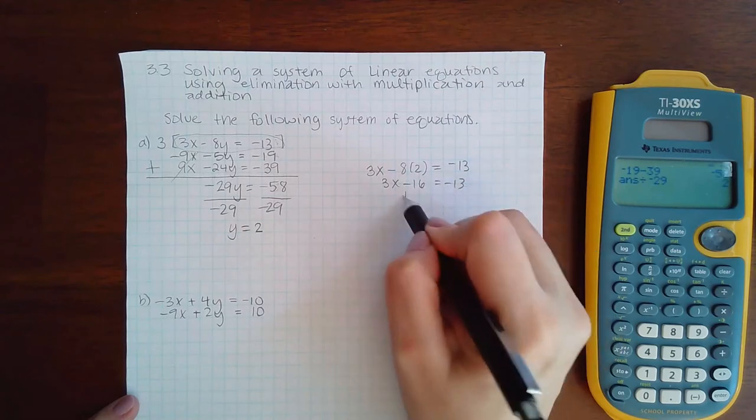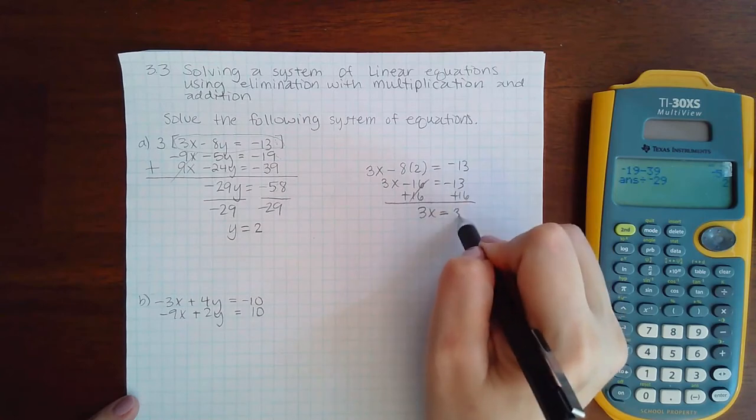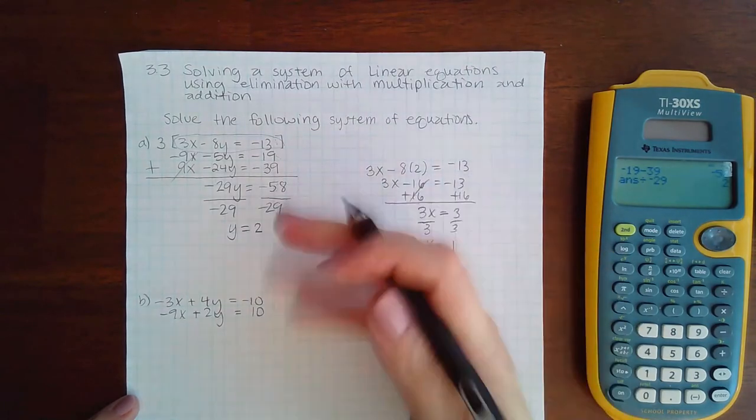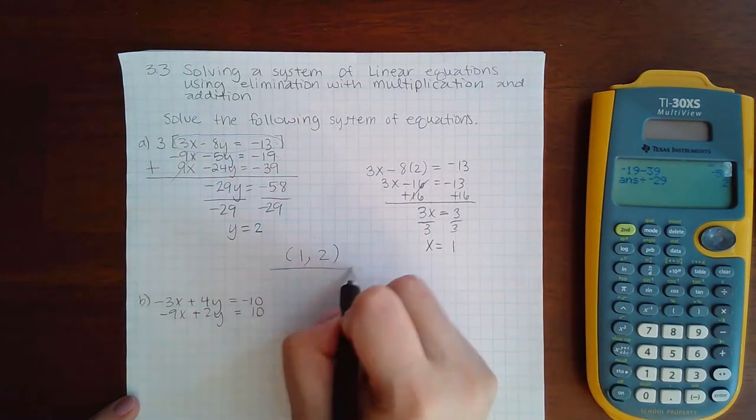And then I'm going to add 16 to both sides, and then divide by 3 on both sides. I get x equal to 1. So then now what is the answer? The x coordinate comma the y coordinate: (1, 2).